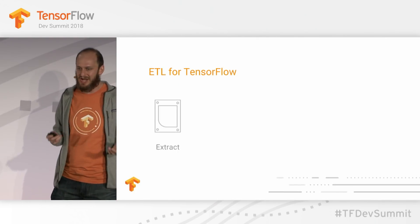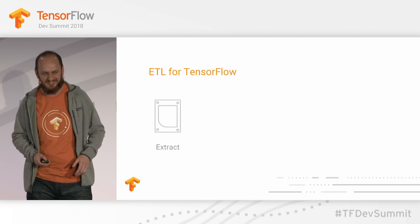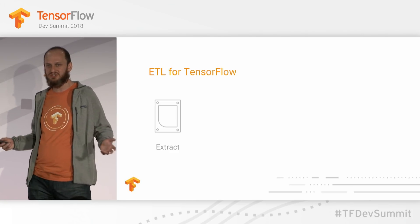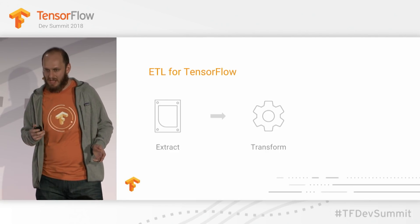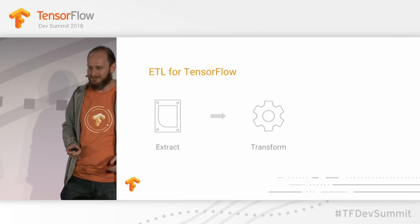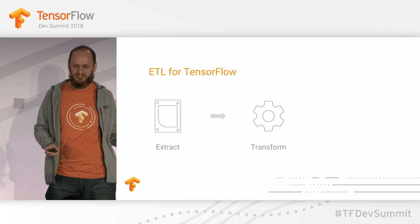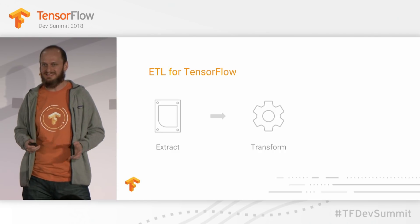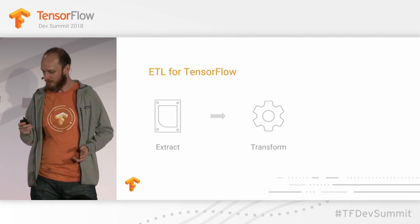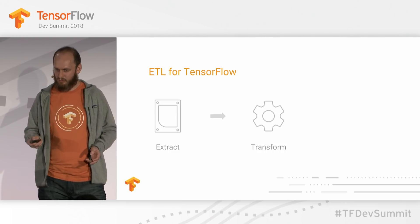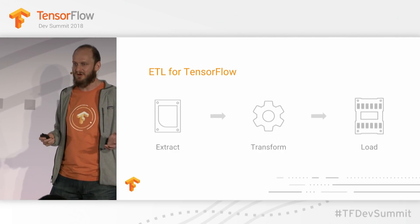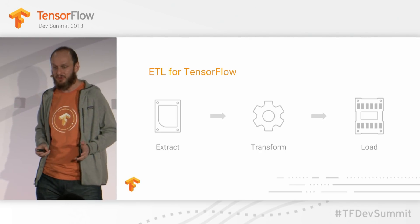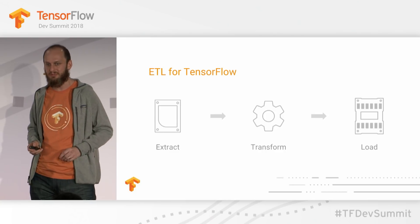First, we have the tools to extract data from a wide range of sources. These can range from in-memory arrays to multi-terabyte files sharded across a distributed file system like GCS. Then we have the tools to transform your data — enabling you to change the representation, extract features, perform data augmentation, and ultimately convert your raw data into the tensors you'll use to train your model. And finally, we have a set of tools for loading the transformed data into the memory of your GPUs and TPU accelerators, which can be particularly important for end-to-end performance.